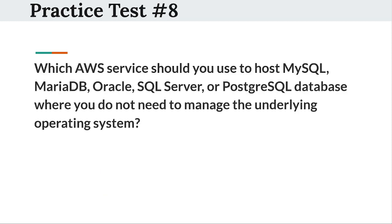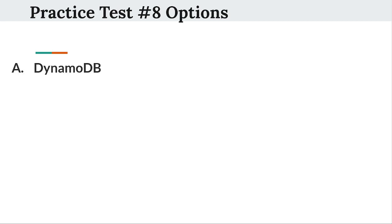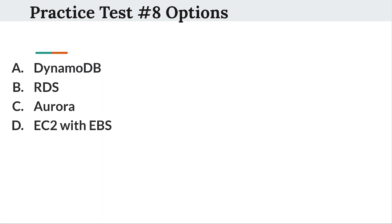So the next question is: Which AWS service should you use to host MySQL, MariaDB, Oracle, SQL Server, or PostgreSQL databases where you do not need to manage the underlying operating system? Option A: DynamoDB. Option B: RDS. Option C: Aurora. Option D: EC2 with EBS.